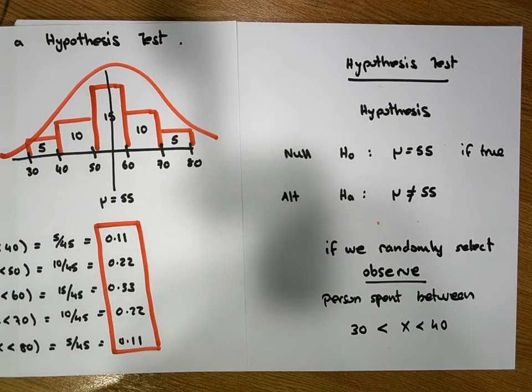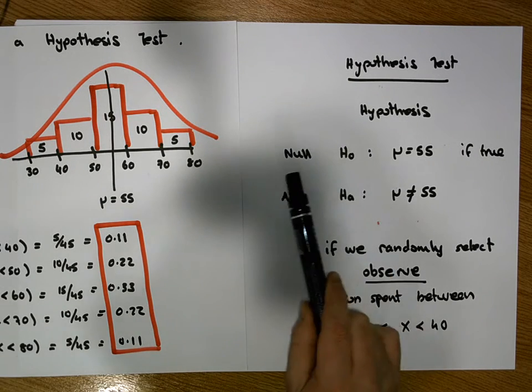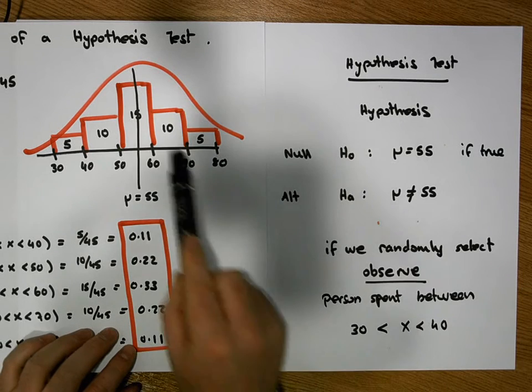Our hypothesis test, once again, has two positions. It has a null position. In this case, I'm assuming that the population from which I'm randomly selecting from has a mean value of 55.